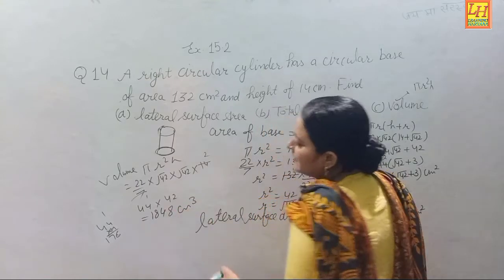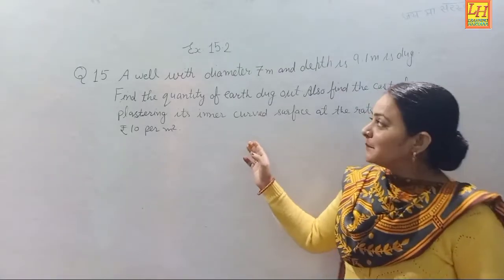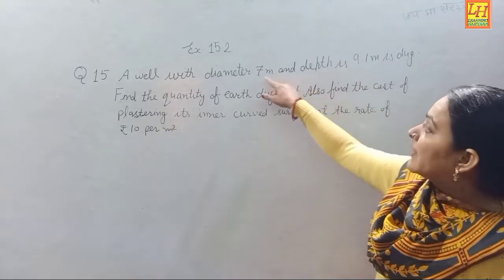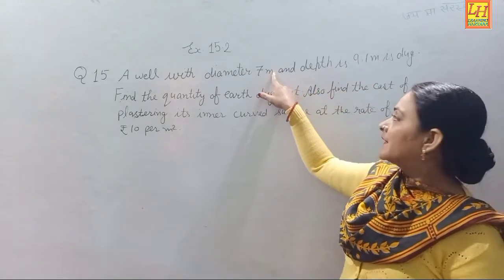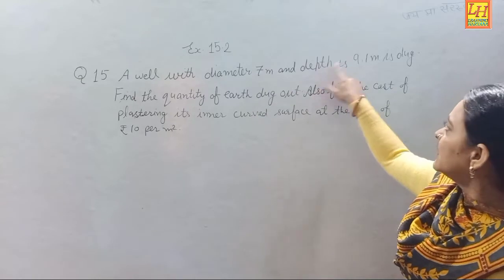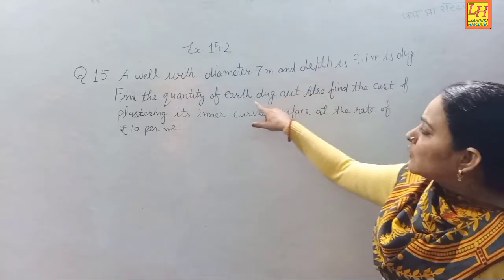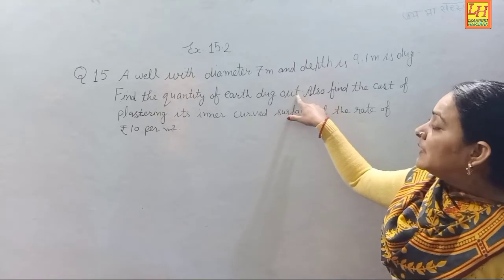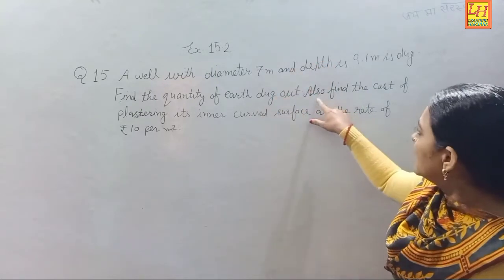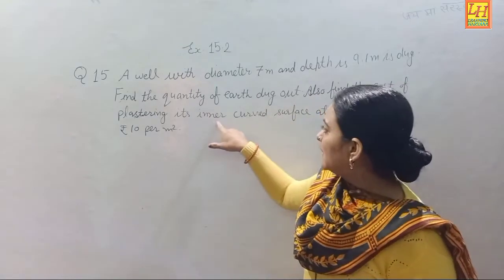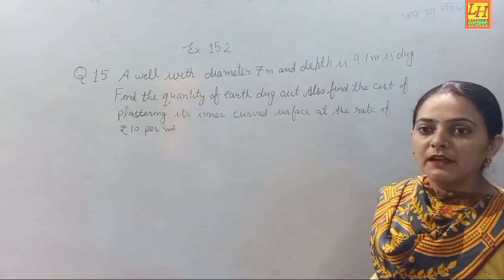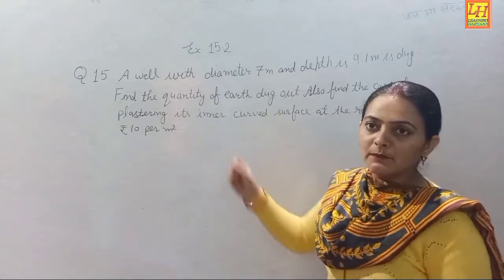Now Question Number 15: A well with diameter 7 meters and depth 9.1 meters is dug. Find the quantity of earth dug out. Also find the cost of plastering its inner curved surface at the rate of rupees 10 per square meter.